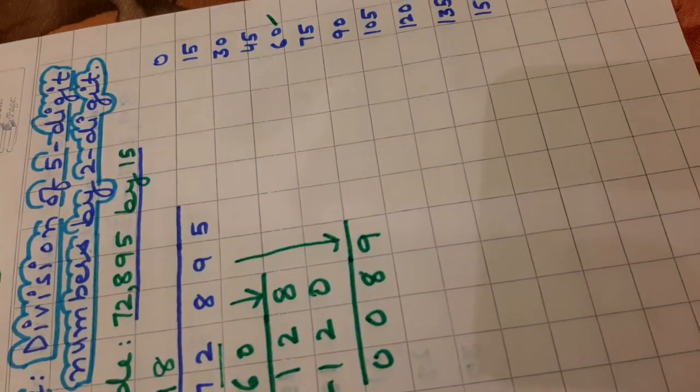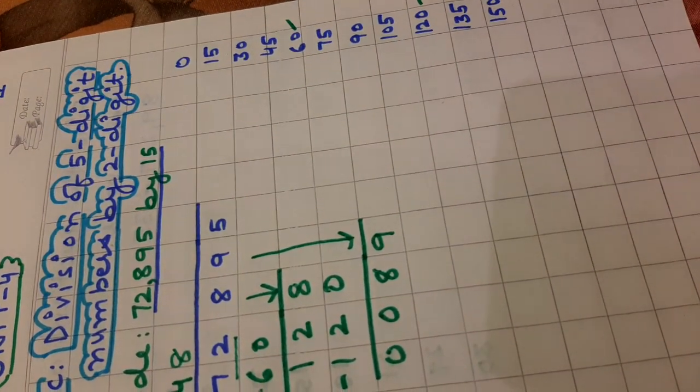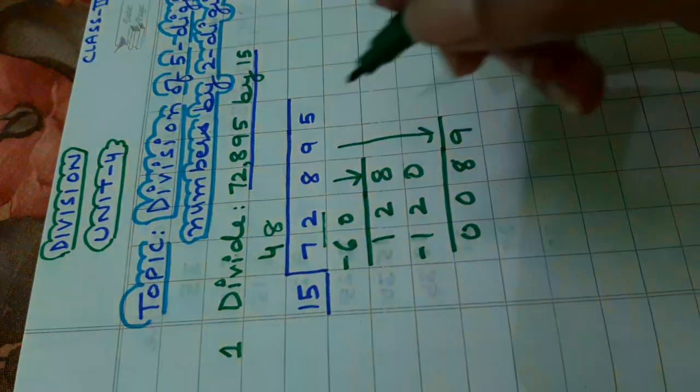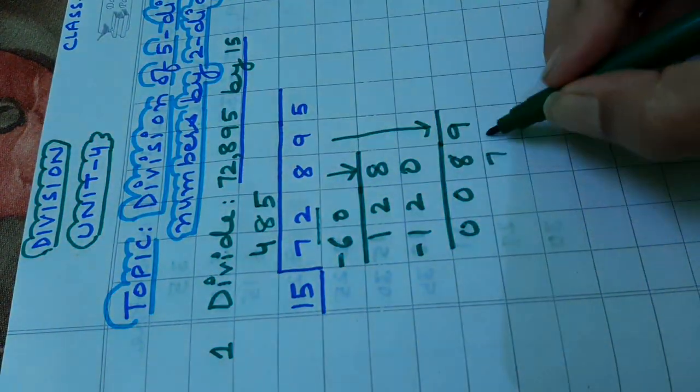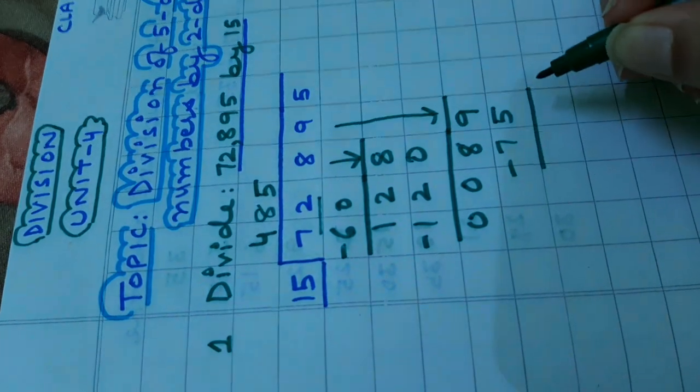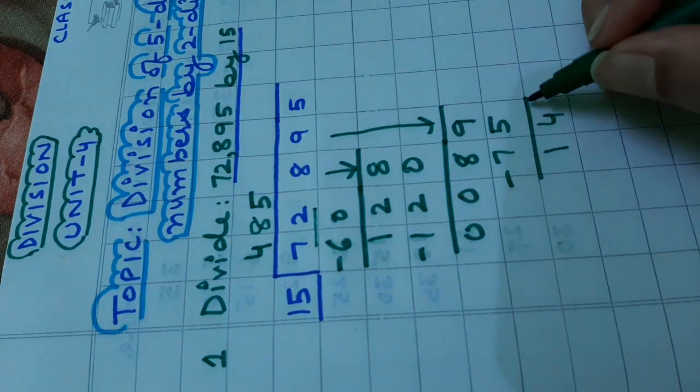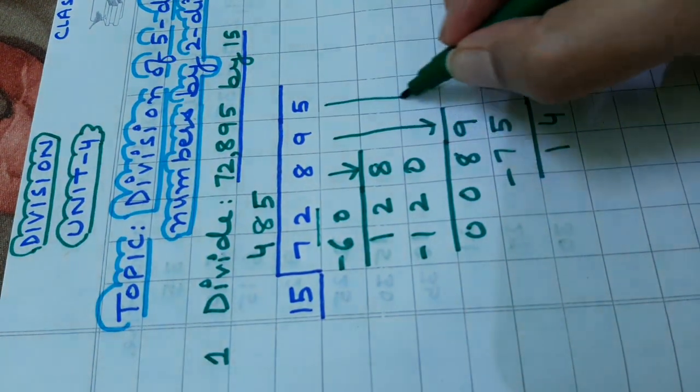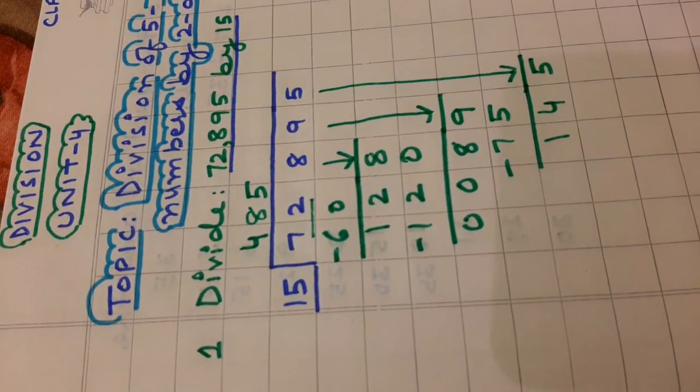Now, the number which is less than 89 in the table of 15 is 75. 15 fives are 75. Write it here. Subtract it. 9 minus 5 is 4. 8 minus 7 is 1. Now, copy this 5. It will become 145.